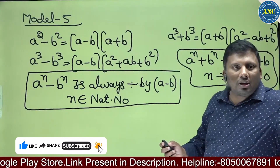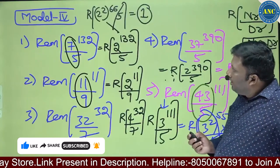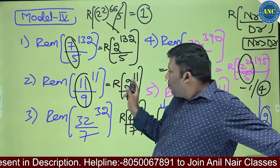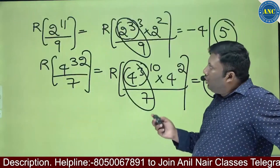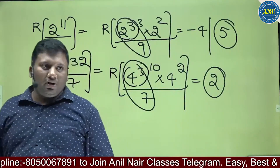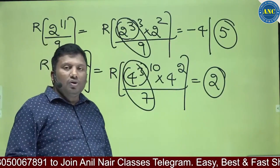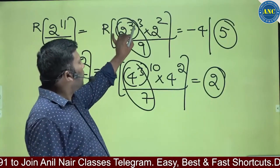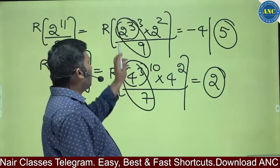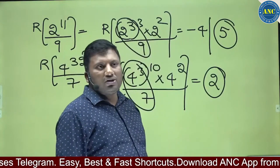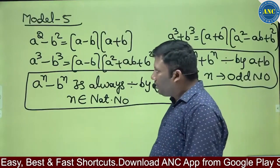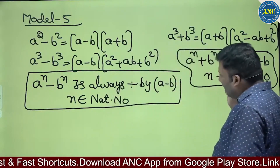Second problem: 2 power 11 divided by 9. Which power of 2, when divided by 9, gives remainder plus 1 or minus 1? 2 power 3 is 8, divided by 9 gives remainder minus 1. So the remaining power is 2 squared. The remainder becomes minus 1, so it is 4. Minus 4 means the positive remainder is 5.